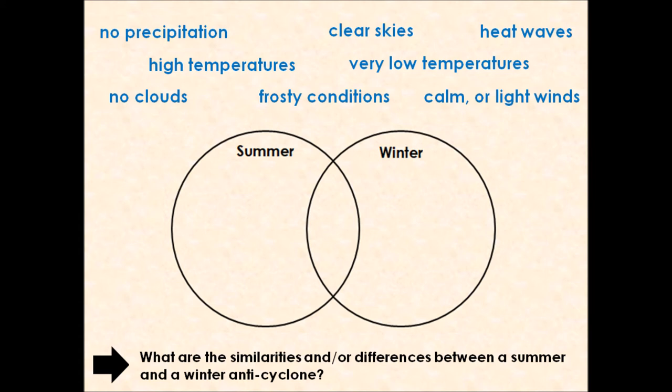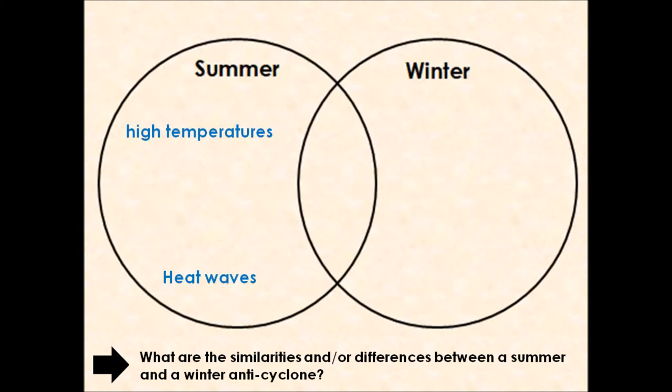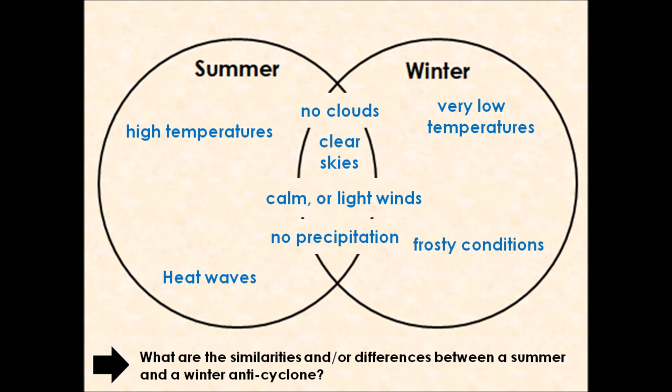If we're thinking about your summer anticyclone in that left hand side of your Venn diagram, you should have high temperatures and heat waves. In your winter anticyclone on the right hand side, you've got very low temperatures and those frosty icy conditions. Weather conditions experienced by both a summer and winter anticyclone are no cloud formation, so no clouds, lovely clear skies as a result, calm or light winds, and no precipitation because that warm air can hold more moisture than cold air, so we have no condensation, no cloud formation, and therefore no rain, hail, sleet or snow.